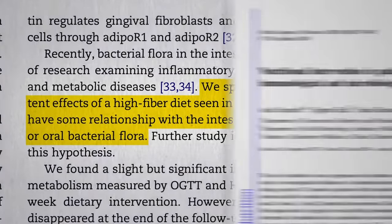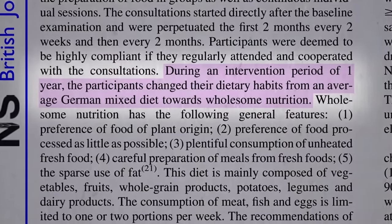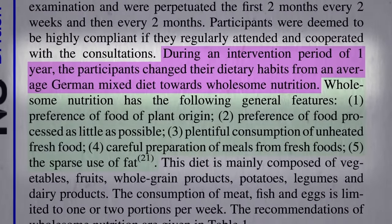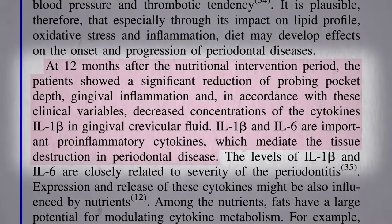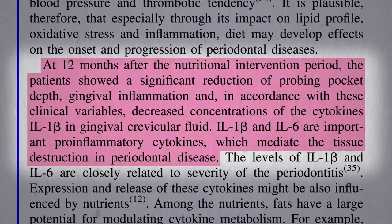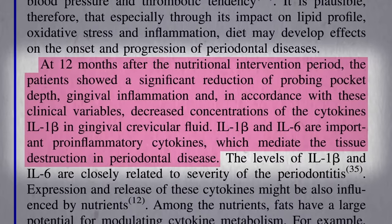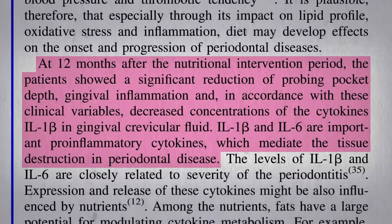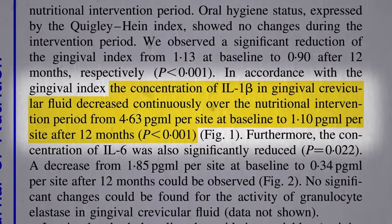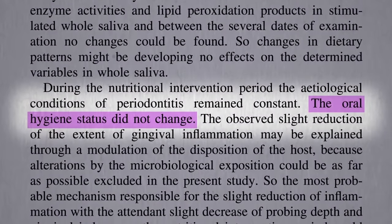German researchers took 20 women with mild to moderate chronic periodontitis, and for a year tried to transition their diets towards more wholesome nutrition — meaning more plant foods, whole foods, and fresh foods, centering their diets around vegetables and fruit, whole grains, potatoes, and legumes: beans, split peas, chickpeas, and lentils. After 12 months, the patients showed a significant reduction of probing pocket depth, gingival inflammation, and — measured for the first time — decreased concentrations of inflammatory chemicals inside the crevice between the tooth and gums, thought responsible for tissue destruction, a decrease by as much as 75%. All the while, their oral hygiene status didn't change, suggesting it was the diet that did it.